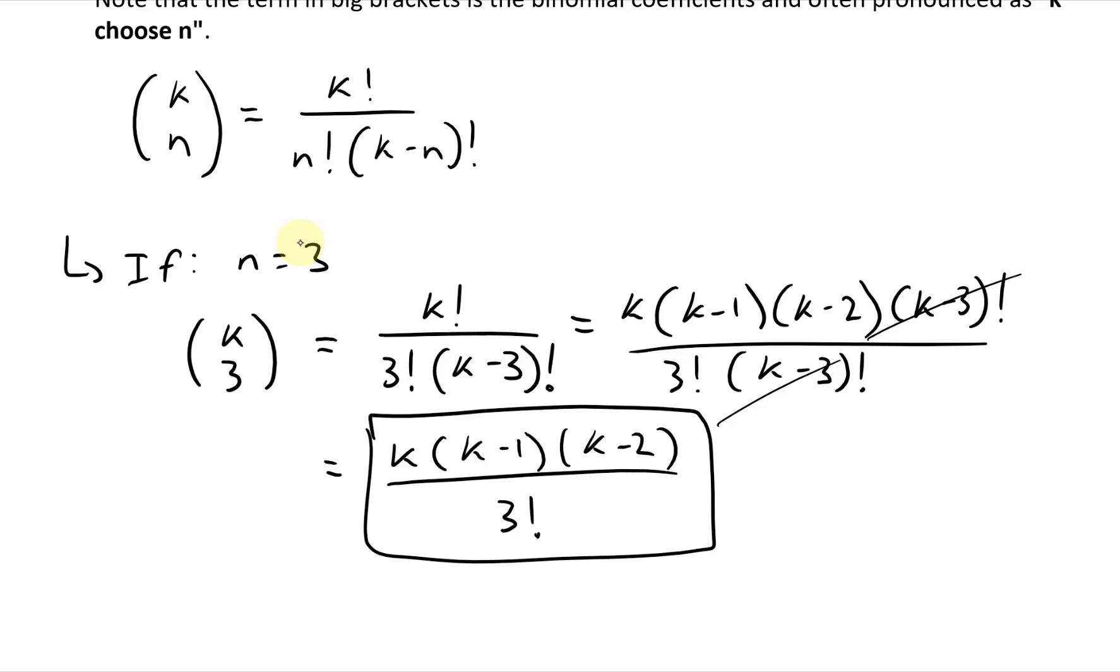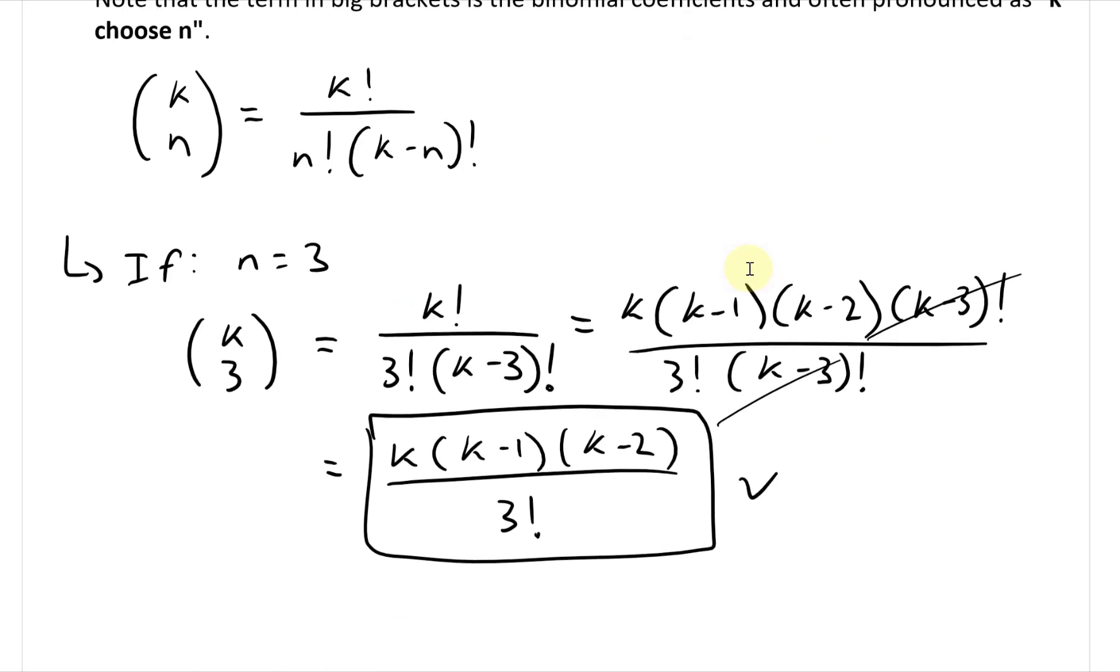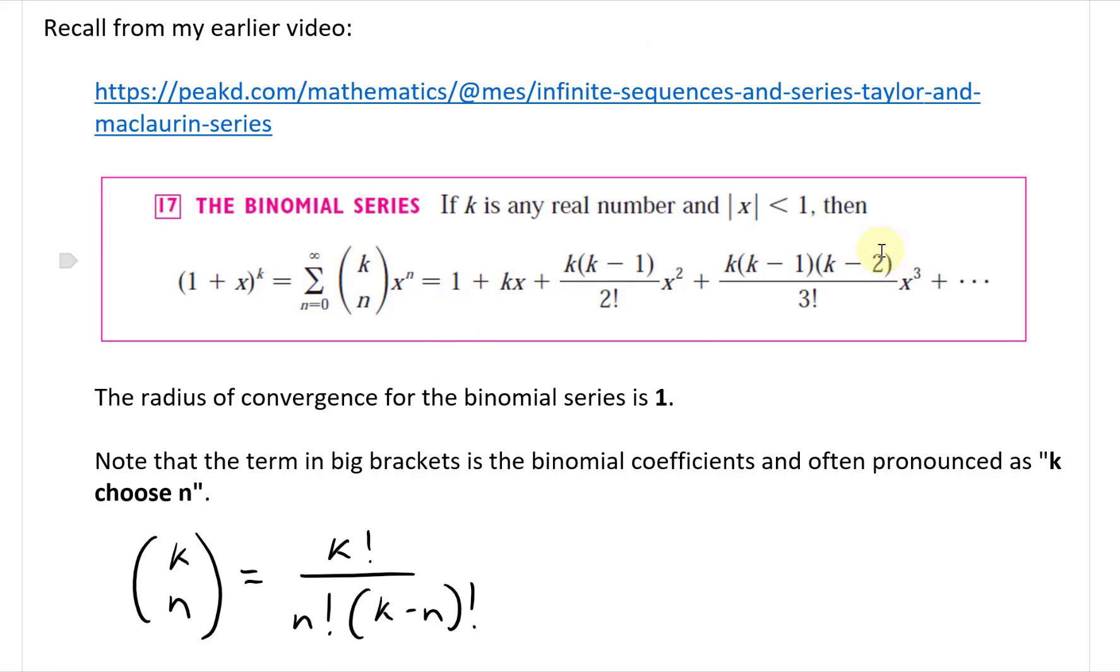And if I just box this out, this is exactly what we have right over here. So there's k times k minus 1 times k minus 2 divided by 3 factorial. That's the coefficient for x to the power of 3.